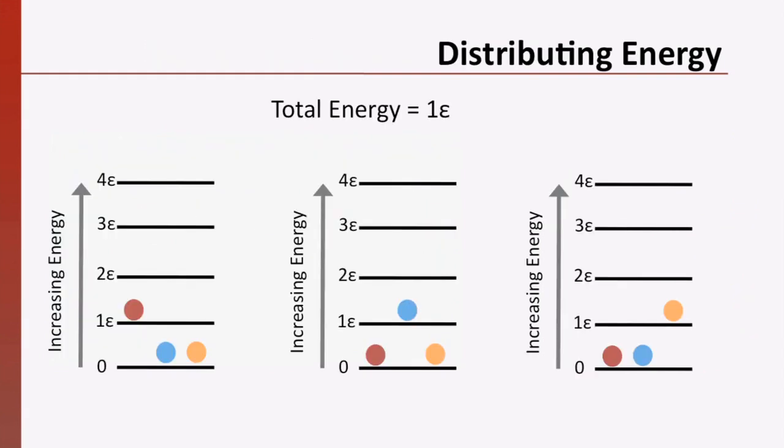So when we say that entropy is a measure of the number of possible ways energy can be distributed in a system of molecules, we have to account for all of the possible combinations. And the way we do that is by considering the microstates available to the molecules in the system.